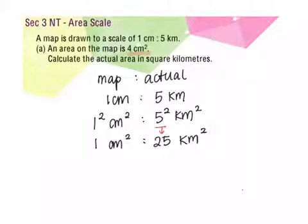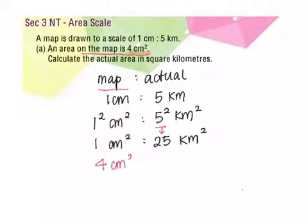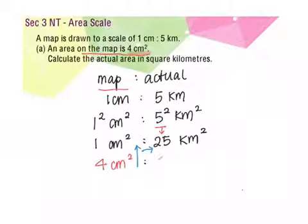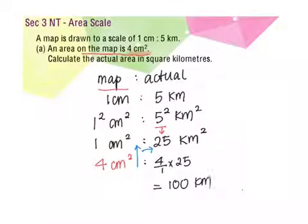Then we can calculate using the information given. The map area is 4 cm². We want to find the actual area. So we take 4 over 1 times 25, which gives us 100 km². Therefore, the actual area in square kilometers is 100 km².